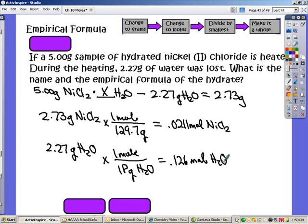Now again, I'm going to divide by the smallest. This one, of course, comes out to 1. And the other one comes out to 6.